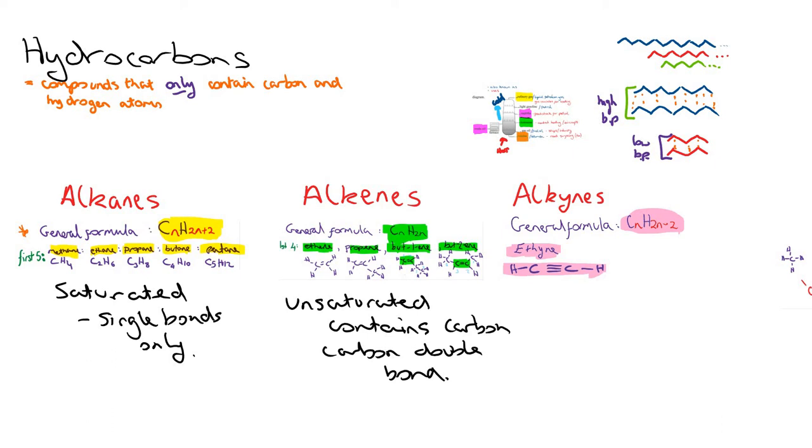So now what we're going to do is have a quick look at the chemical properties of these three homologous series. The physical properties will all be fairly similar because they'll all have just van der Waals forces between the molecules. As the alkane or alkene or alkyne chain increases in length, there are more van der Waals forces, so therefore the boiling point increases.